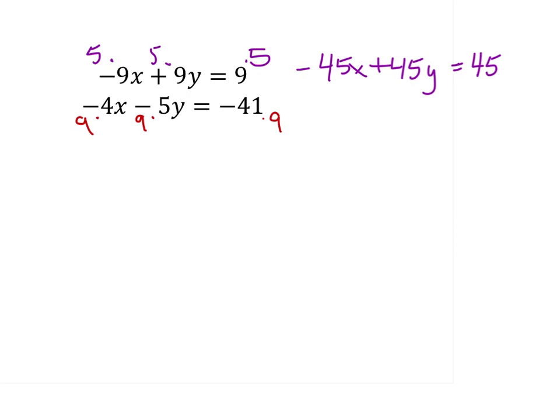So 9 times -4x is -36x, and we'll multiply the other ones as well. So from that second equation, we have the equation in red.